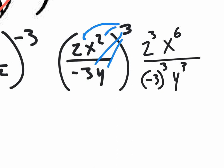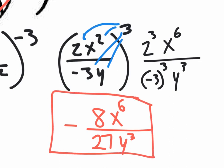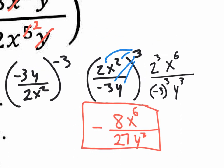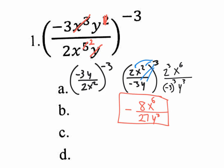Let's simplify everything. Our final answer is eight on top — two times two times two is eight — and X to the sixth. On the bottom, you're going to have negative 27 Y to the third. On the multiple choice answer, you're probably going to have that negative sign in the middle. Number one on the midterm is exactly like this, except maybe a number or two changes.